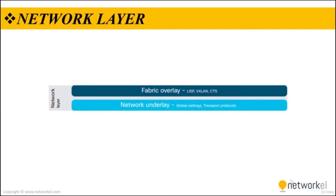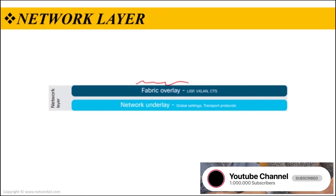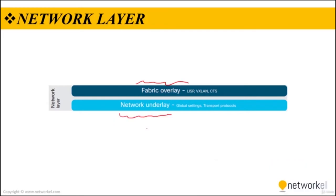Running on top of the physical layer is the network layer. This layer can be further divided into two sub-categories: the first is the fabric overlay, and the second is the network underlay. The network underlay contains the settings, protocols, and tables as well as stacking or device virtualization techniques for the physical devices that provide a transport layer. The fabric overlay contains the settings, forwarding, and policy protocols and tables for devices that provide a logical services layer.